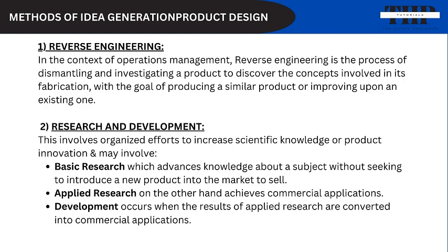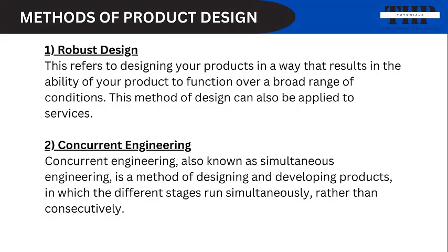Let's get back to product design. There are various methods or ways that a firm may choose to go about their product design. First, robust design refers to designing your products in a way that results in the ability of your product to function over a broad range of conditions. This method of design can also be applied to services. Second, concurrent engineering, also known as simultaneous engineering, is a method of designing and developing products in which the different stages run simultaneously rather than consecutively. This decreases product development time and also the time to market, leading to improved productivity and reduced cost, because all the stages of production are being undertaken at the same time.